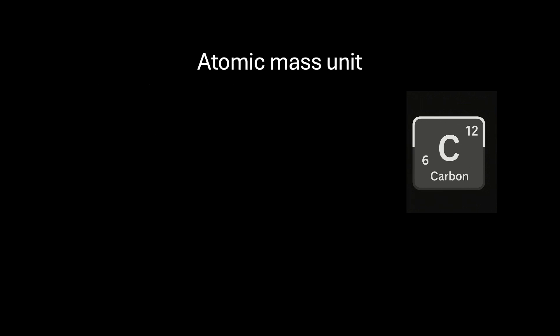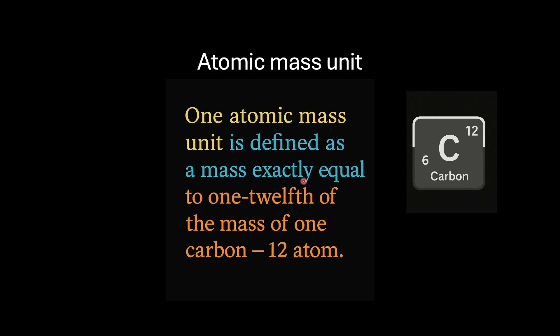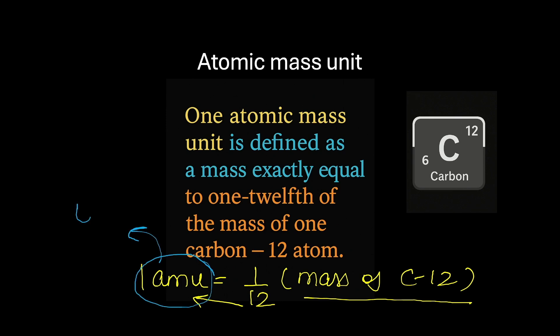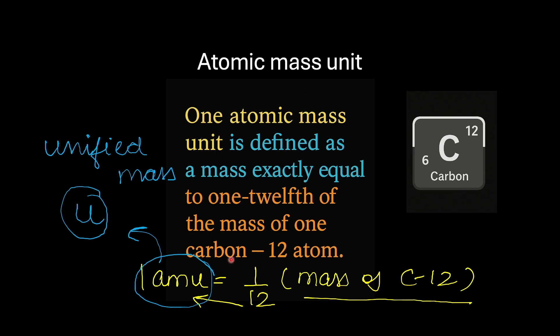This international agreement gave the world a universal and consistent standard. AMU can be defined as the mass exactly equal to one-twelfth of the mass of one carbon-12 atom. So, one AMU = 1/12 the mass of carbon-12. Equivalently, the mass of one carbon-12 atom is 12 AMU. At present, this AMU has been replaced by u, which we call the unified mass. In this AMU system, masses of all other atoms are given relative to this standard.